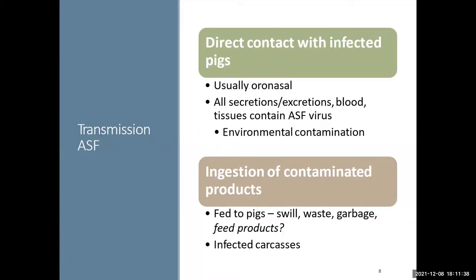Transmission is primarily oral-nasal, and all secretions and excretions from infected pigs are infectious. There's a large amount of virus in blood, and it can contaminate the environment. One risk factor is contaminated products — in some countries it can spread when contaminated meat products are fed to pigs. A concern for US introduction is that many components of swine feed are imported from countries that have ASF, including different supplements.